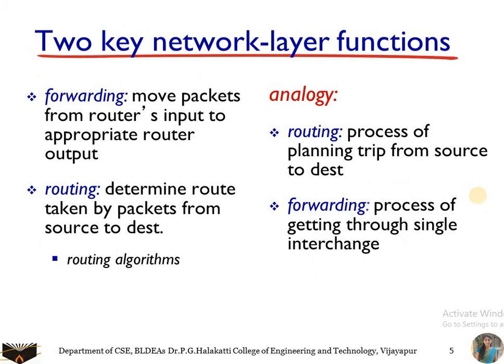The network layer has two key functionalities: forwarding and routing. Forwarding means moving packets from a router's input to the appropriate router's output. Routing means determining the route taken by packets from source to destination. The analogy is: routing is the process of planning a trip from source to destination, while forwarding is the process of getting through a single interchange. In routing, you decide the entire path — through how many intermediate nodes the packet will move and how it will reach the destination — and all this information is pre-planned and saved in the header before sending.